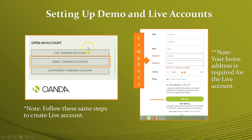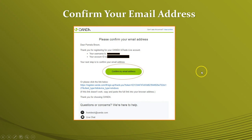If you're doing a live trading account, you follow these same steps. However, once you get to the screen to enter in your information, it will also ask you for your address information. You will also receive a confirmation email from OANDA where you need to click on the 'Confirm My Email Address' icon in order to confirm your account with OANDA.